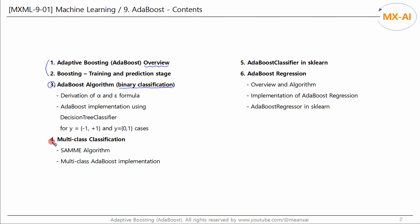Chapter 4 deals with the multi-class classification problem. The SAMI algorithm is used for multi-class classification. And in Chapter 6, we're going to look at Adaboost's regression algorithm.